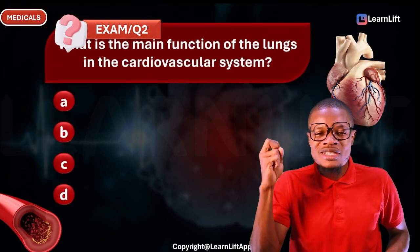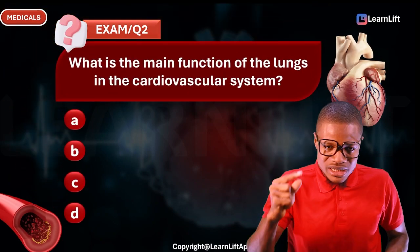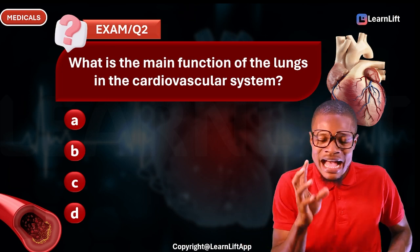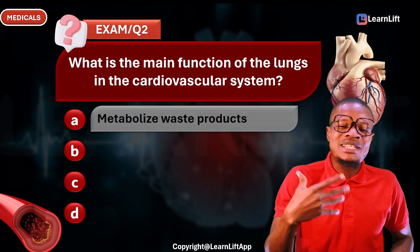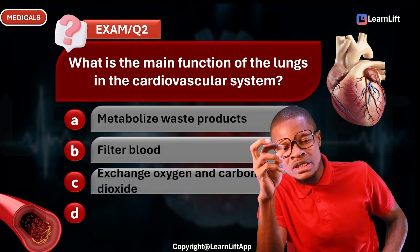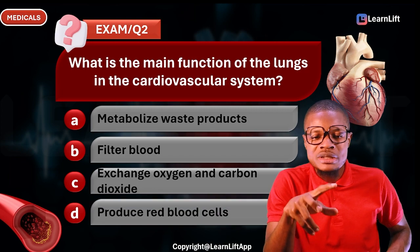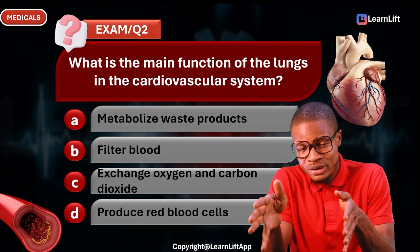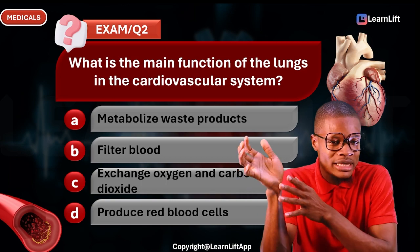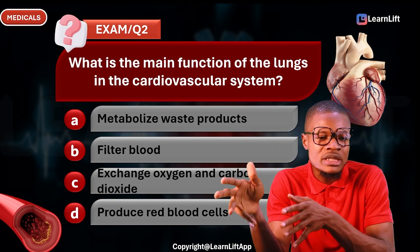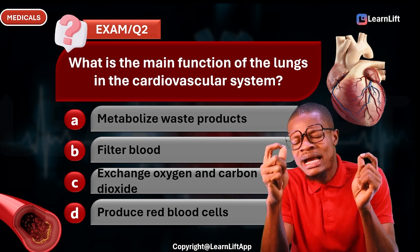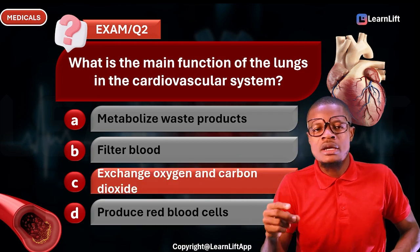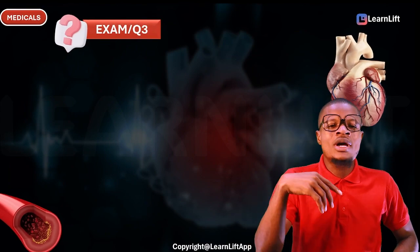Question two: What is the main function of the lungs in the cardiovascular system? Option A: metabolize waste products. Option B: filter blood. Option C: exchange oxygen and carbon dioxide. Option D: produce red blood cells. Bone marrow produces red blood cells; the kidneys metabolize waste and filter blood. The correct answer is Option C — exchange of oxygen and carbon dioxide.